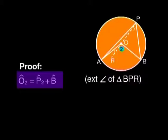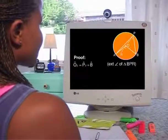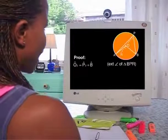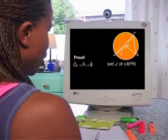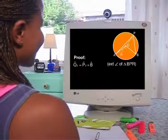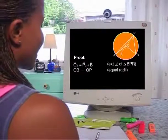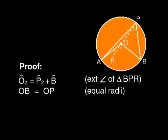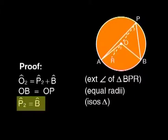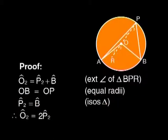O2 equals P2 plus B — because it's the exterior angle of triangle BPR. And OB equals OP because they are equal radii. So P2 equals B by the isosceles triangle. Therefore, O2 equals twice P2.